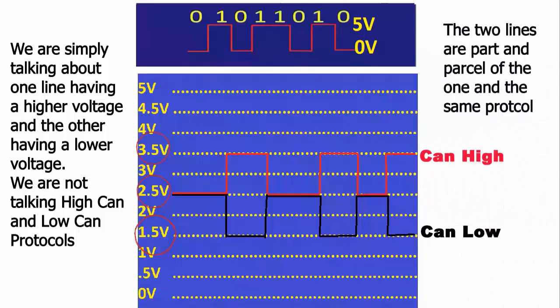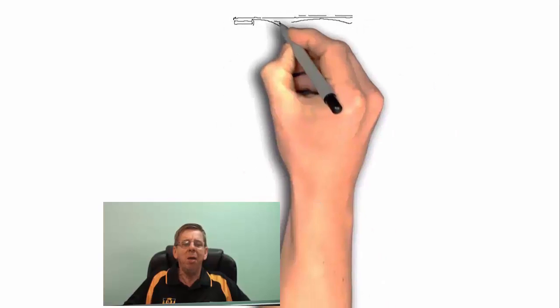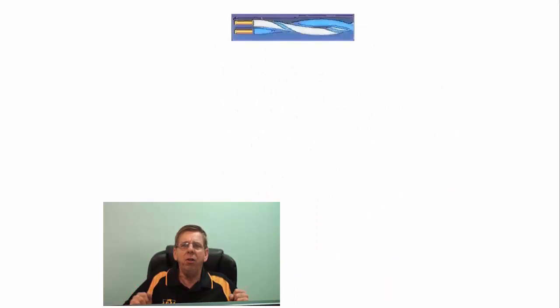As high-speed CAN has a HI-CAN line and a LO-CAN line. The two lines are part and parcel of the one and the same protocol. Why does CAN use two twisted wires of the same length and why the different voltages? Well let's start with the twisted wires.